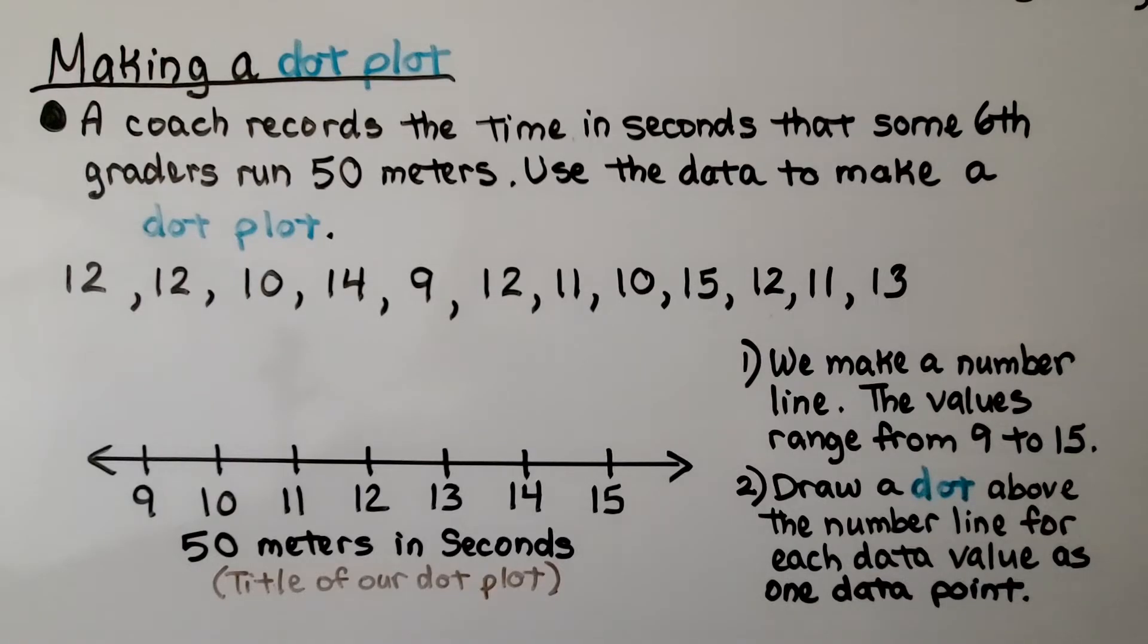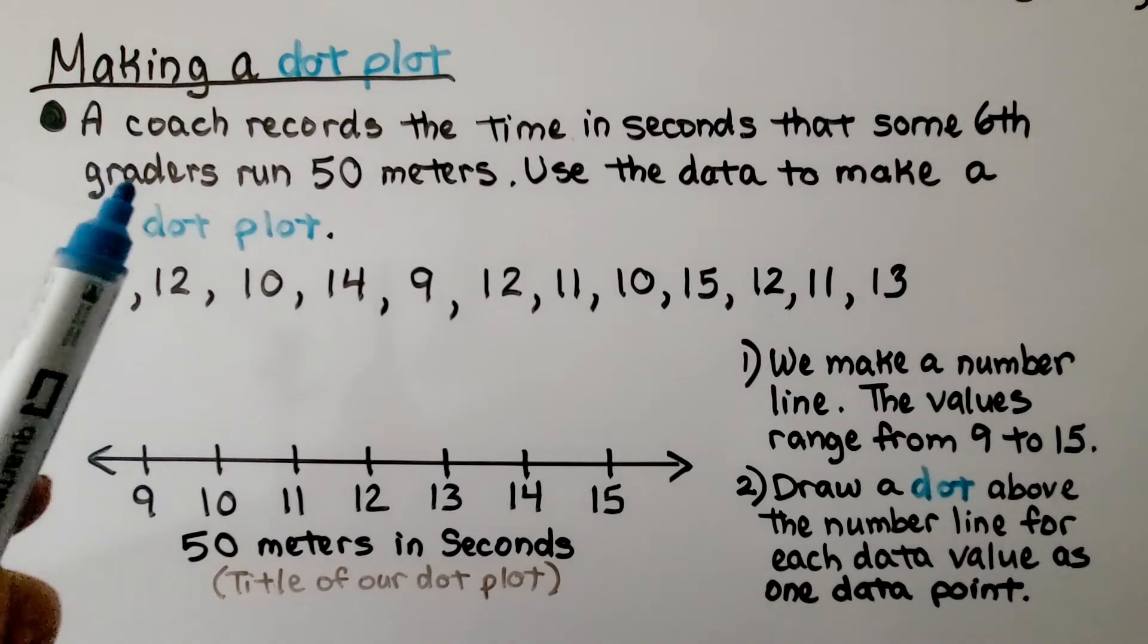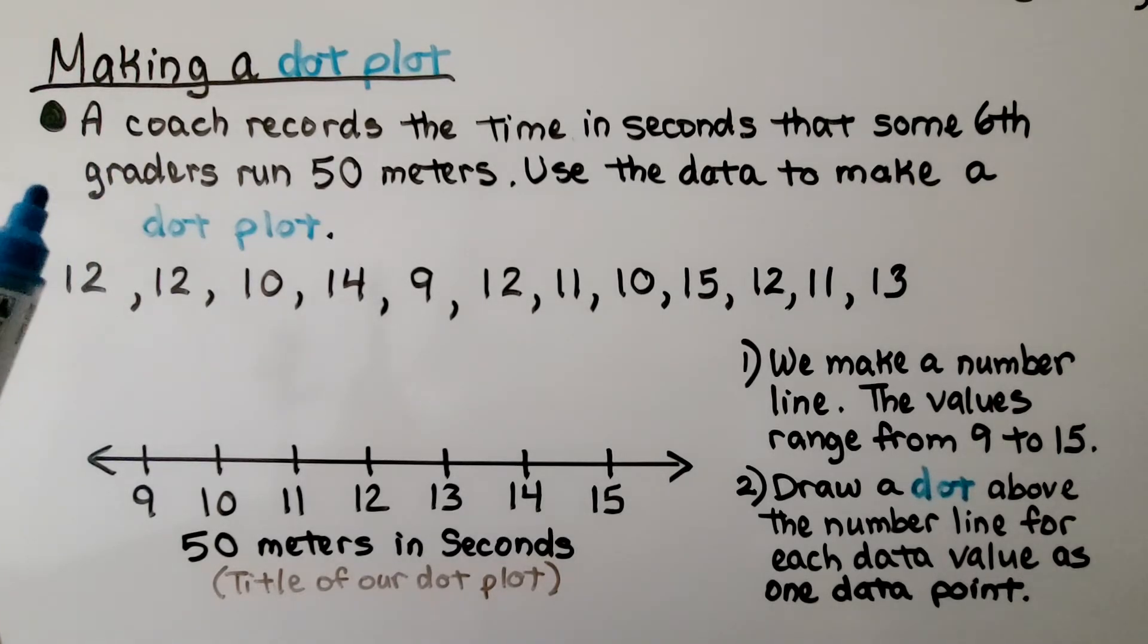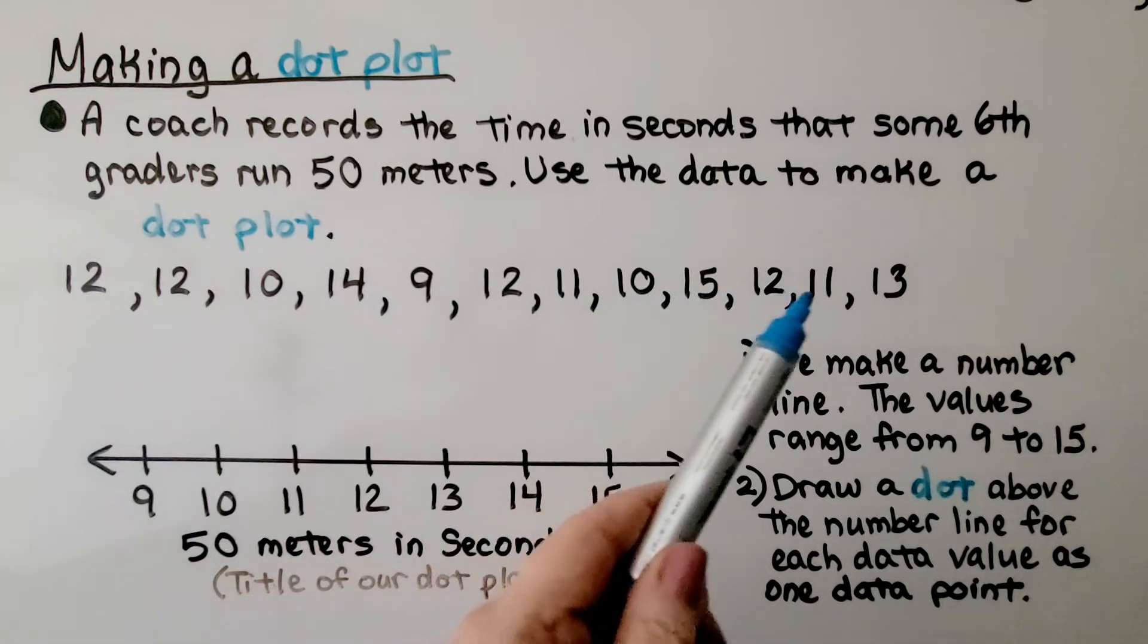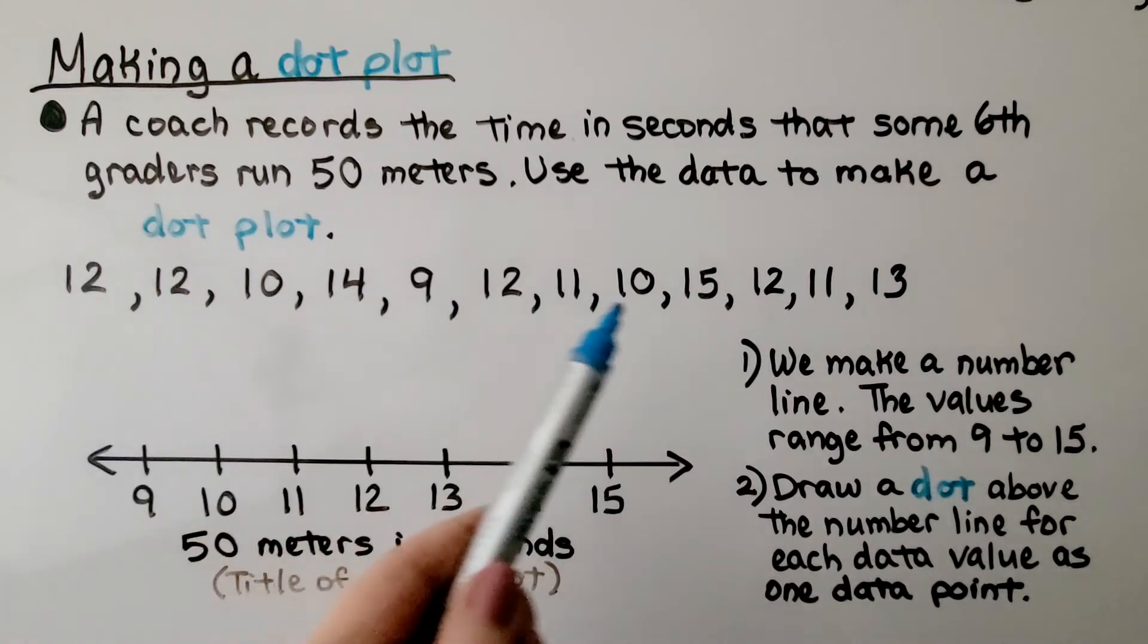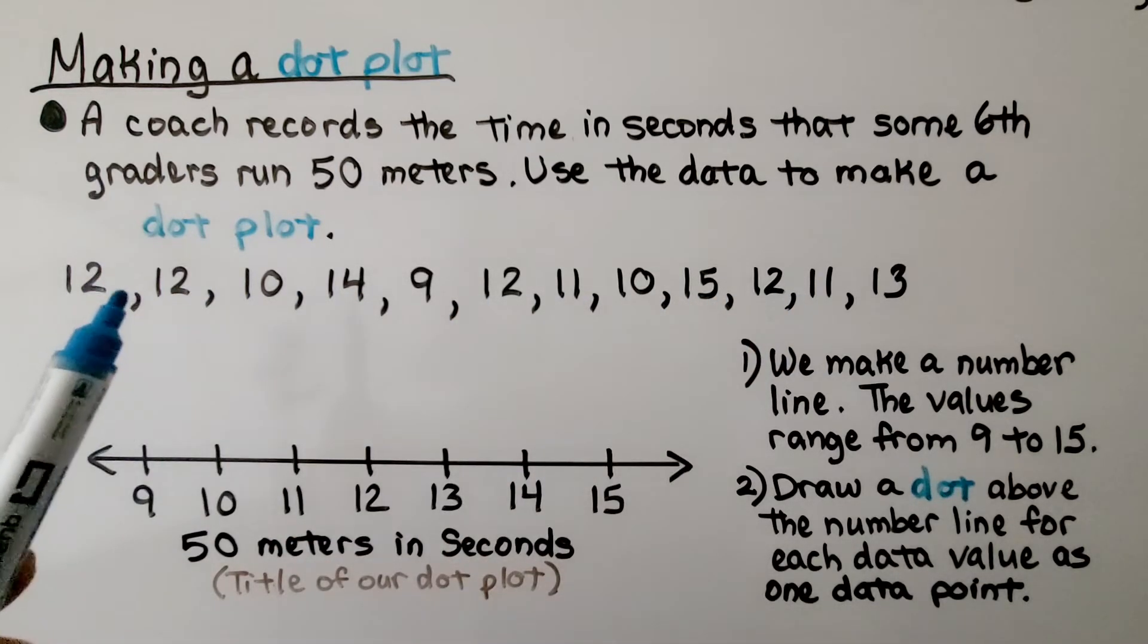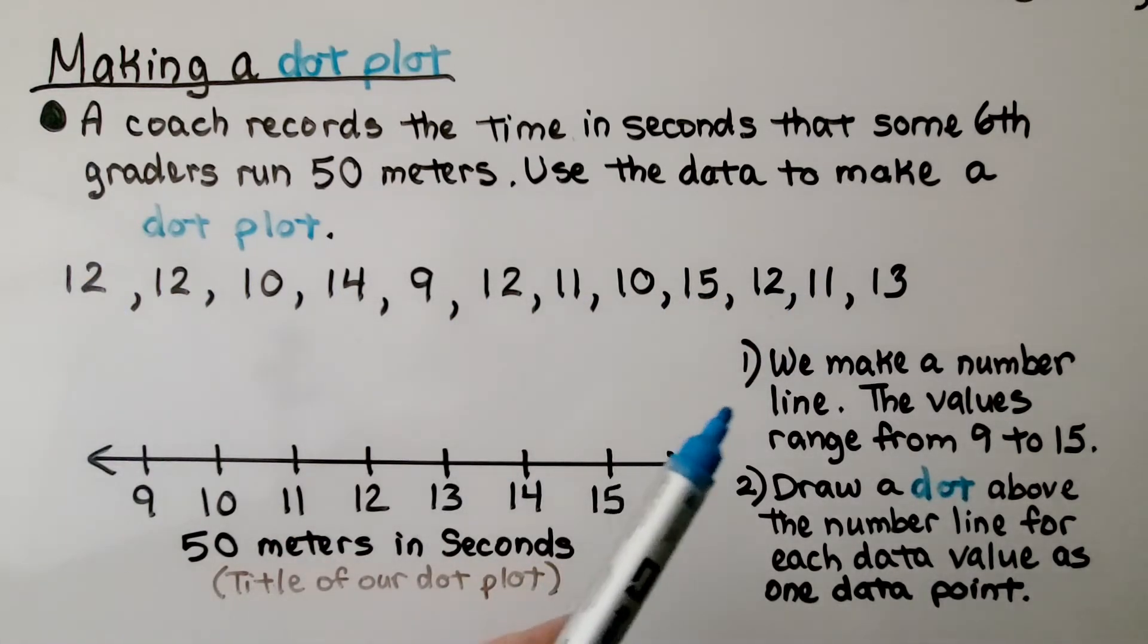Let's try making a dot plot. A coach records the time in seconds that some sixth graders run 50 meters. Use the data to make a dot plot. Here's the time in seconds that these sixth graders were able to run 50 meters. The first thing we do is make a number line.